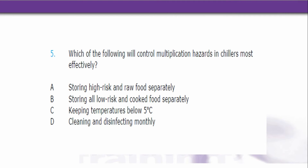Number 5. Which of the following will control multiplication hazards in chillers most effectively? Is it: A. Storing high risk and low risk food separately? B. Storing all low risk and cooked food separately? C. Keeping temperatures below 5 degrees C? D. Cleaning and disinfecting monthly? As I said earlier, if you want to pause and decide on the answer, you're welcome to do that.